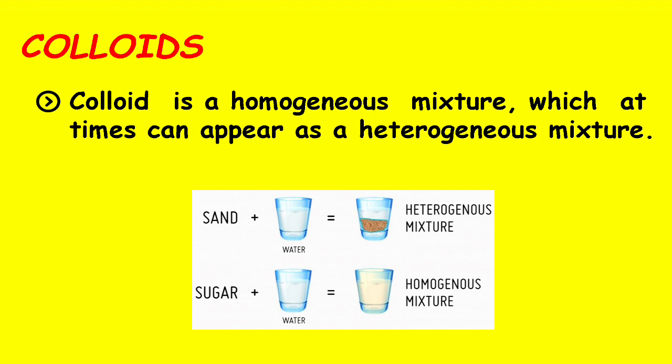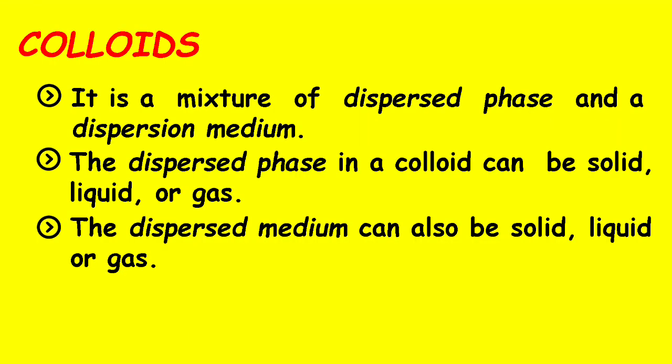Colloids is a homogeneous mixture which at times can appear as a heterogeneous mixture. It is a mixture of a dispersed phase and a dispersion medium. The dispersed phase in a colloid can be solid, liquid, or gas. The dispersion medium can also be solid, liquid, or gas.